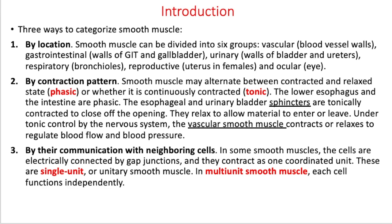By contraction pattern, smooth muscle can be phasic — meaning it alternates between phases of contracted and relaxed states — or smooth muscle can be tonic, meaning it is continuously contracted. We'll be giving you examples in a bit for both. And then finally, the last way we categorize smooth muscle is by their communication with neighboring smooth muscle cells — either as a single unit, where cells are electrically connected by gap junctions, or as multi-unit, where each cell functions independently.